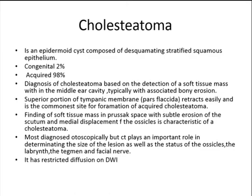Another component of the head and neck is the temporal bone. The most common pathology is cholesteatoma, which is in fact an epidermoid cyst — only 2% are congenital, the vast majority are acquired. Diagnosis is based on detection of a soft tissue mass in the middle ear cavity with associated bone erosions, which is the most important finding. The superior portion of the tympanic membrane, called pars flaccida, retracts easily and is the commonest site for acquired cholesteatoma formation. A soft tissue mass in the Prussak space with subtle erosion of the scutum or medial displacement of the ossicles is characteristic. Most are diagnosed otoscopically, but CT plays an important role in determining the size of the lesion, the status of the ossicles, labyrinth, tegmen, and facial nerve. Cholesteatoma shows restricted diffusion on diffusion-weighted imaging.